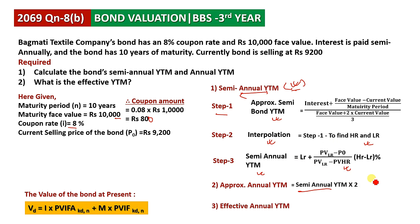The effective annual rate formula is: 1 plus semi-annual rate, raised to the power of 2, minus 1. For semi-annual compounding the power is 2, and for quarterly it is 4. We will now see the solution step by step: Step 1, Step 2, and Step 3.